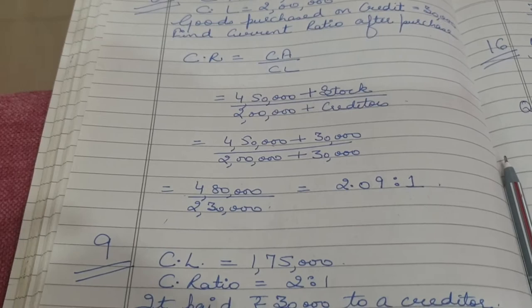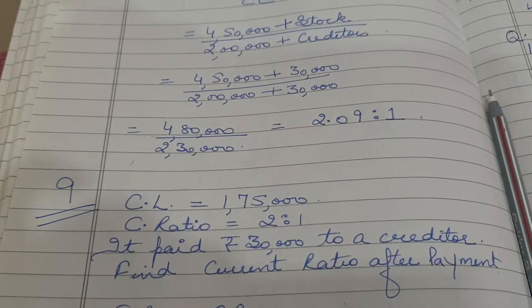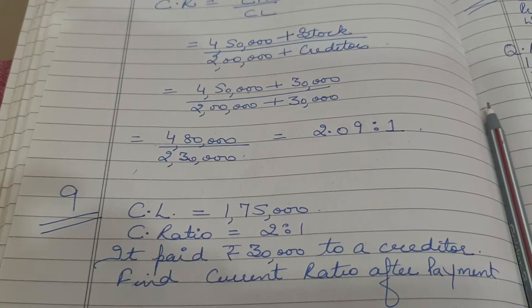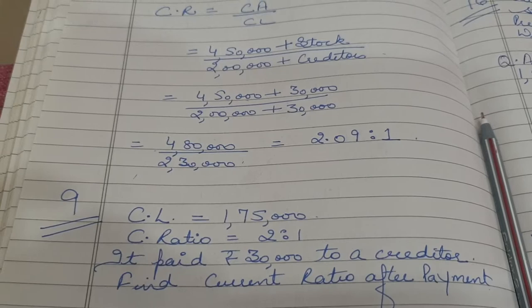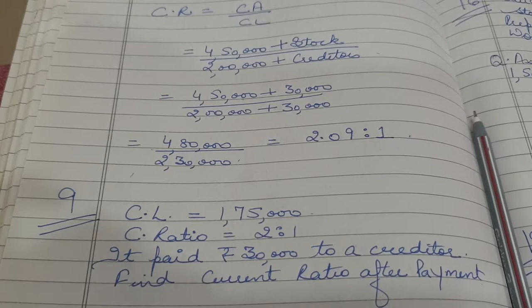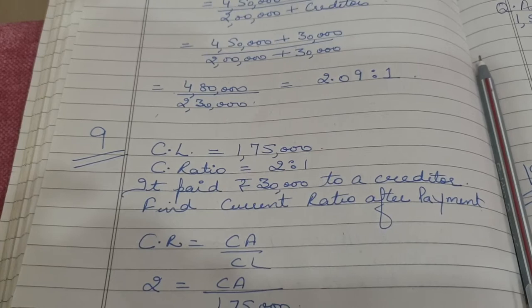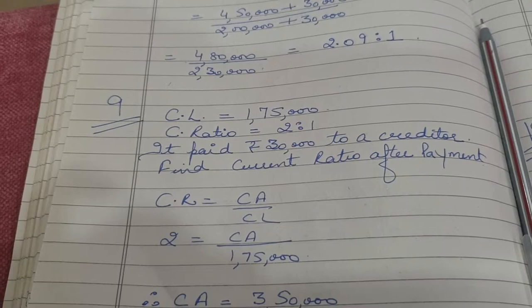Question number 9: current liabilities are Rs. 1,75,000 and current ratio is 2:1. The company paid Rs. 30,000 to a creditor. Find the current ratio after the payment. When payment is made to a creditor, two things get affected: cash decreases, leading to a decrease in current assets, and the creditor liability also reduces, so current liabilities also decrease. First, we find current assets: CA = 1,75,000 × 2 = Rs. 3,50,000.